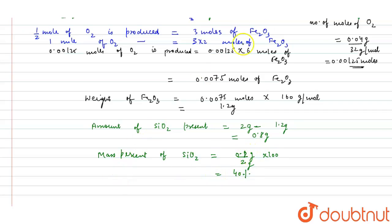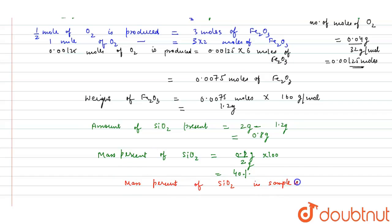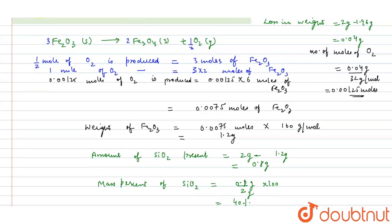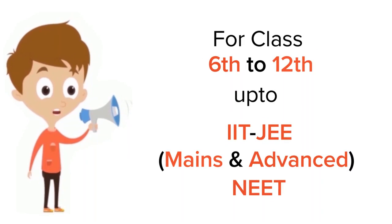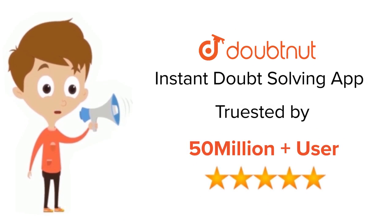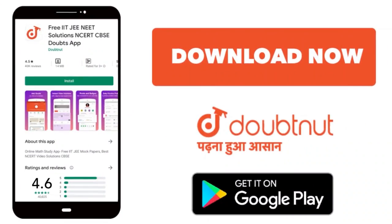This gives us 40 percent. So the mass percent of SiO2 in the sample is 40%. I hope you understood this solution. Thank you. For classes 6–12, IIT JEE and NEET level — trusted by more than 5 crore students. Download DoubtNet.